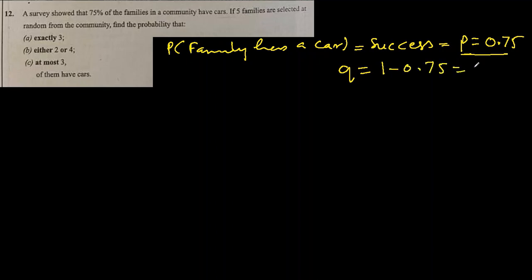We can see that the probability that a family has a car is success. That's what we want, right? And its probability P is equal to 0.75. That means the probability of failure, which is Q, in this case will be 1 minus 0.75, which is 0.25.